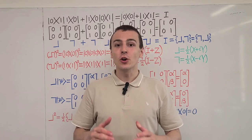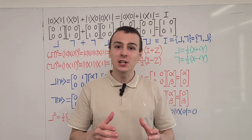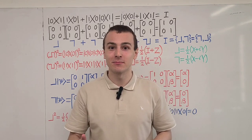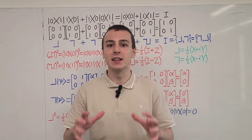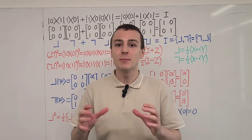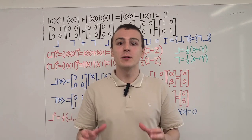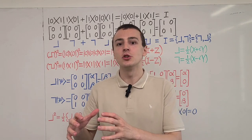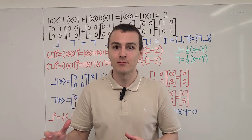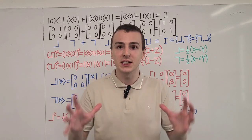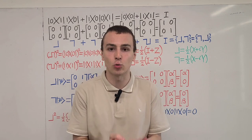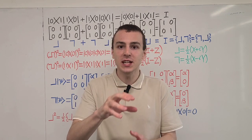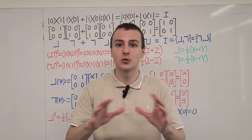Let's investigate ladder operators and projectors for a single-qubit Hilbert space. The kind of Hilbert space we're dealing with in this video is two-dimensional, which means it describes a single qubit. A qubit is a quantum analog to the classical bit. We can think of this as describing a physical system that consists of a ground state and an excited state, and those two states are the only accessible states in our description.